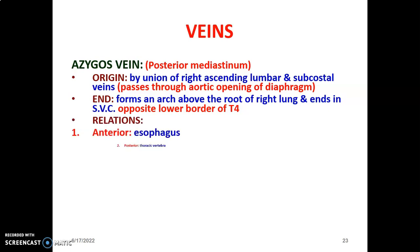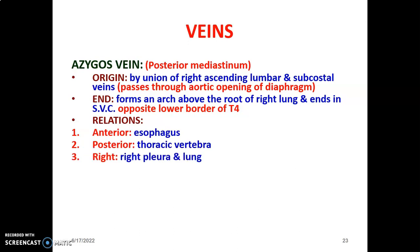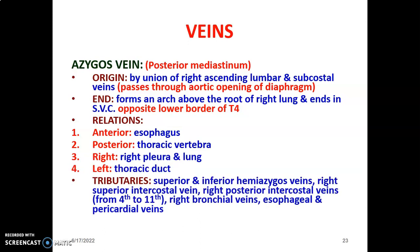The relations of the azygos vein: anteriorly is the esophagus, posteriorly is the thoracic vertebra, to the right is the right lung and pleura, and to the left is the thoracic duct. The tributaries of the azygos include the superior and inferior hemiazygos veins, the right superior intercostal vein, the right posterior intercostal veins from the fourth to eleventh intercostal spaces, the right bronchial veins, esophageal veins, and pericardial veins.